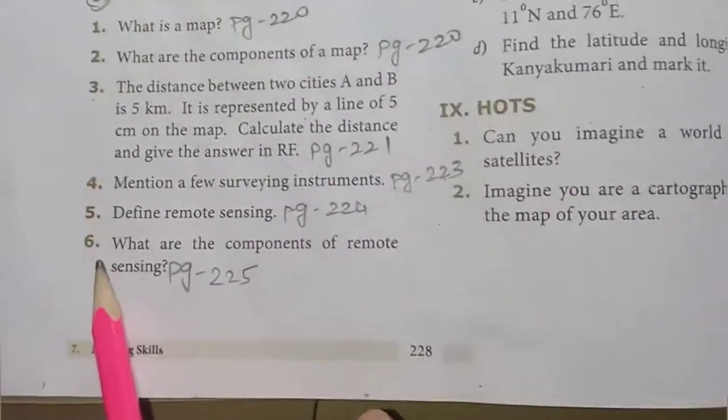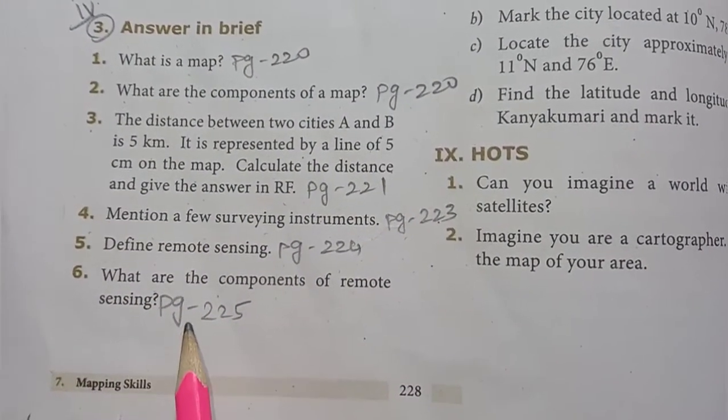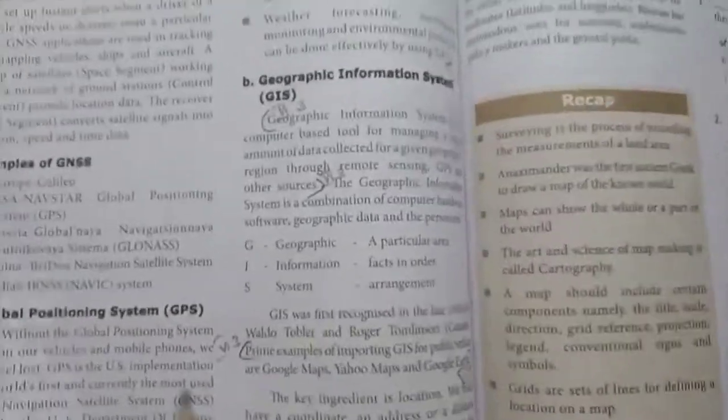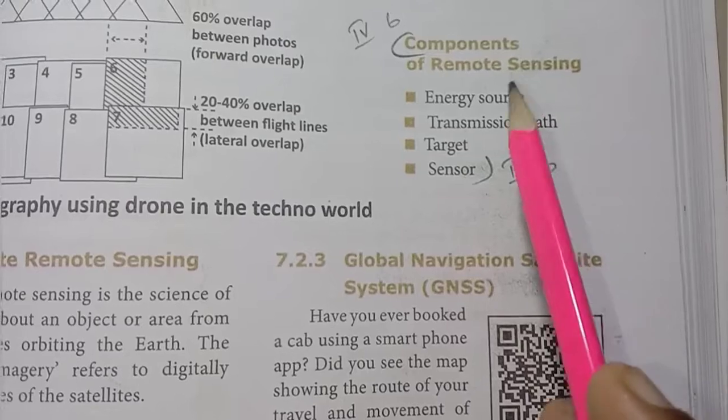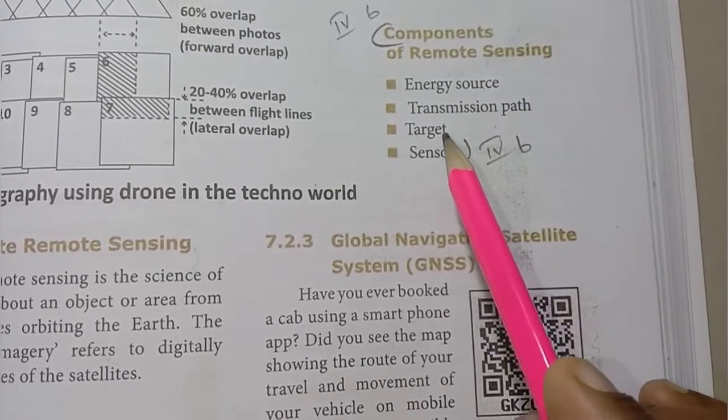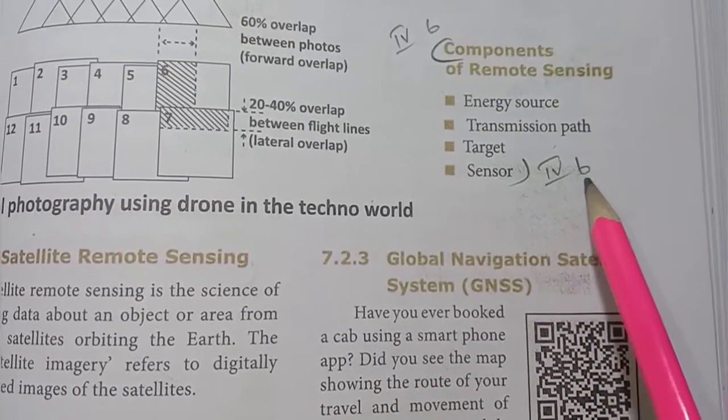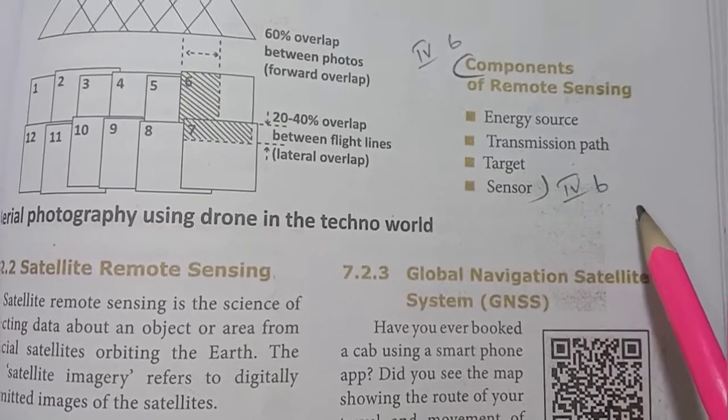Then sixth one, what are the components of remote sensing? Components, page number 225. Components of remote sensing: energy source, transmission path, target sensor. Roman numeral fourth, sixth one answer. Components of remote sensing.